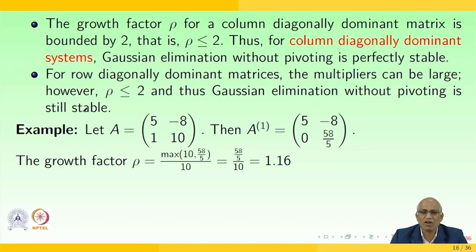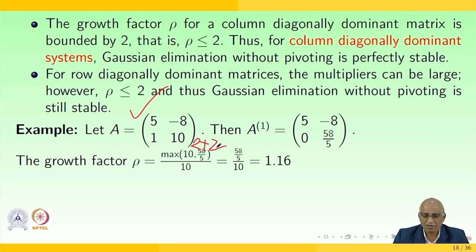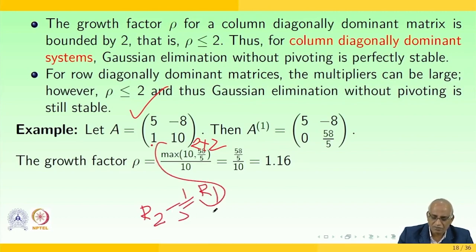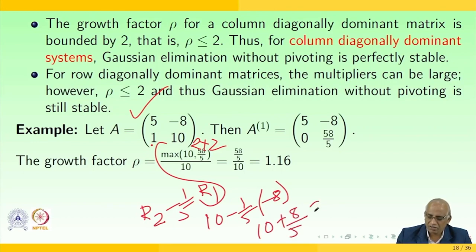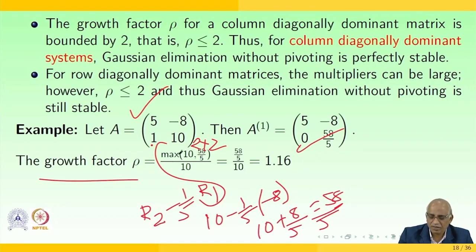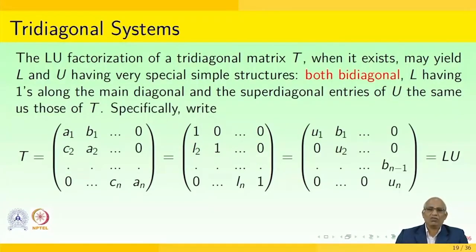Consider the 2×2 matrix A equals [5, -8; 1, 0]. Then A(1) gives R2 minus (1/5)R1, which produces the entry 10 + 8/5 = 58/5. The growth factor rho equals max(10, 58/5) divided by 10 = 58/50 = 1.16. Now let us see the specialized tri-diagonal systems.